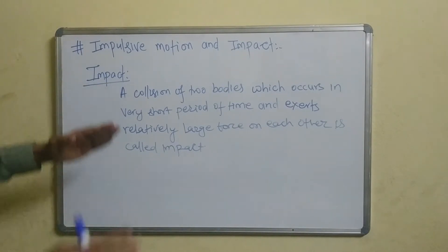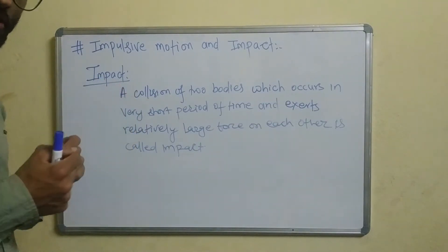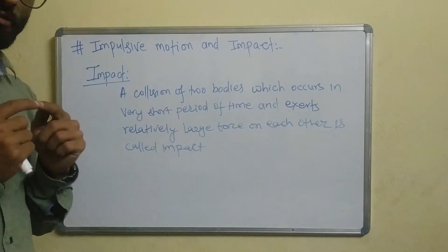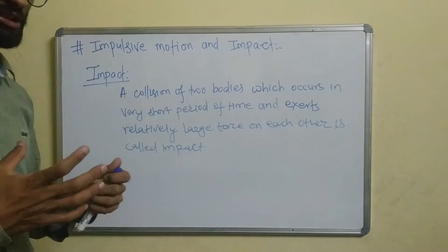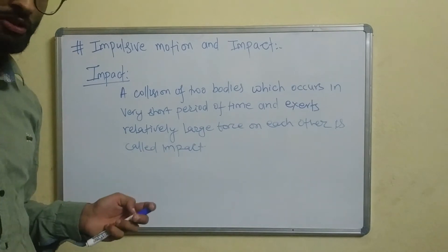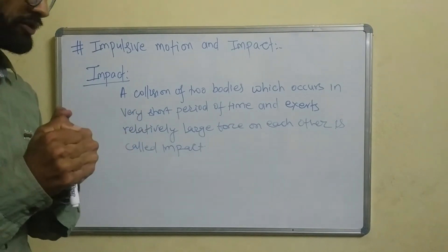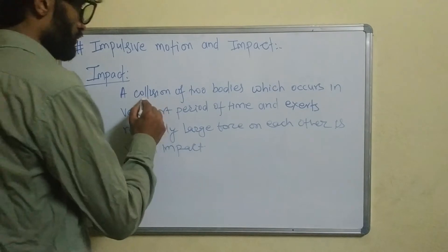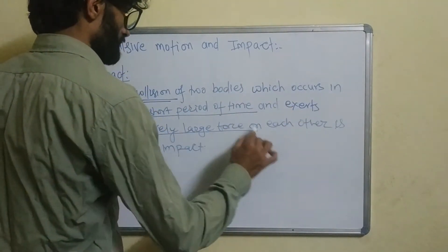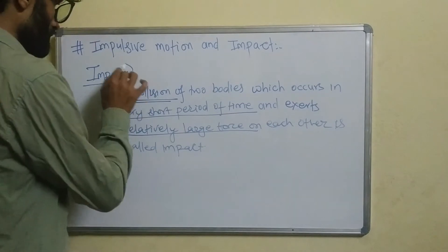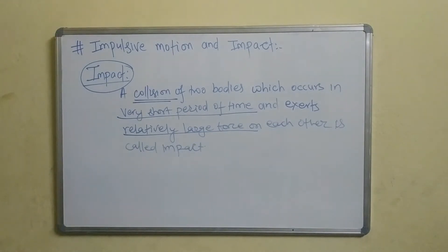In this case, we will have a ball colliding. In a short period of time, a large force exerts and two particles are in contact — this is the impact. Collision of two bodies which occurs in a very short period of time exerts a relatively large force, and this is impulsive motion which occurs in collision.